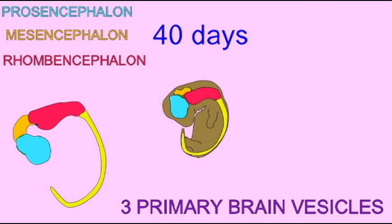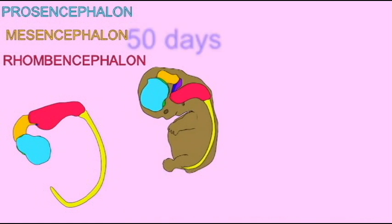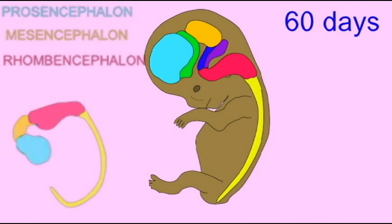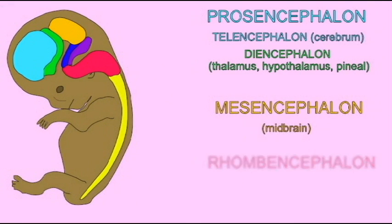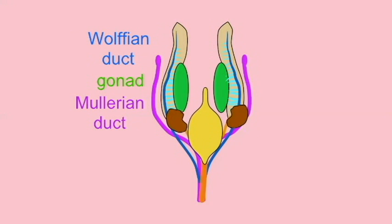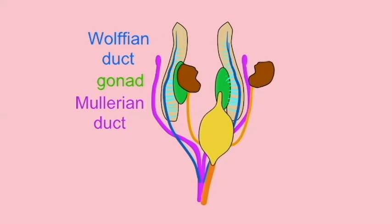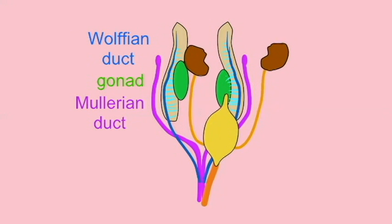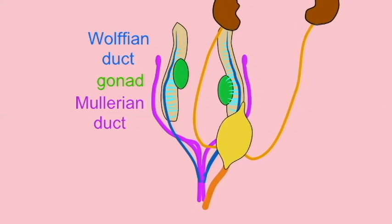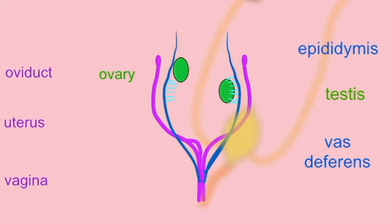Mosaicism can affect many features and not be related at all to gender. If, however, certain cells are expressing only X chromosome material and are essentially female, while other cells possess a Y chromosome and are male, then an individual can be referred to as a gynandromorph.